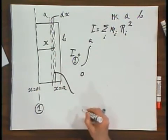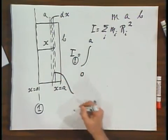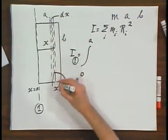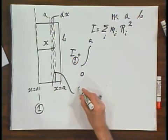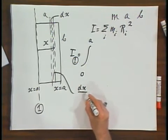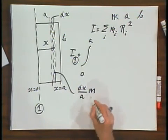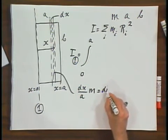So I first have to calculate how much mass is in this ribbon. The mass in this ribbon is dx divided by A times M. That is clearly dM.